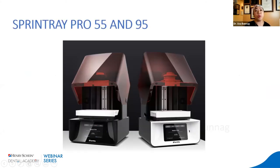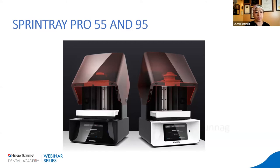We use both the SprintRay Pro 55 and Pro 95. The difference is that the 55 has a smaller build plate but finer resolution — good for dentures, study models, dies, crowns, and bridges. Because we do a lot of ortho, we use the 95 more. The Pro 95 has a bigger build plate and I have two of them. It comes with the Pro Wash and Dry and the curing oven.